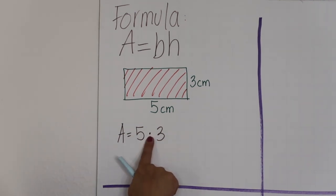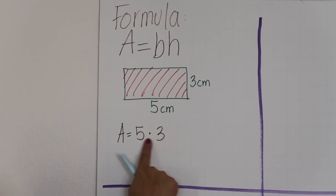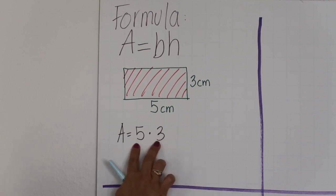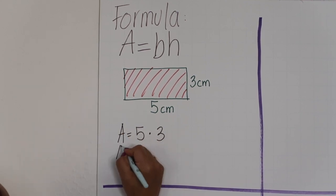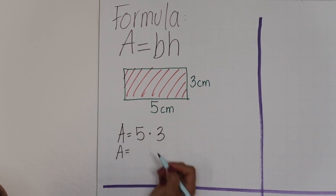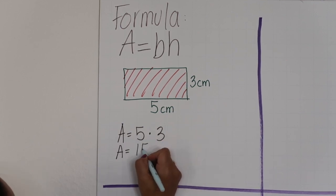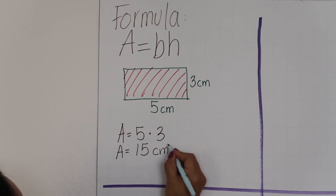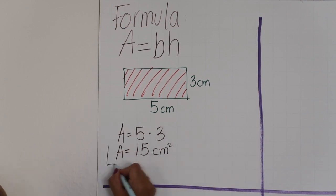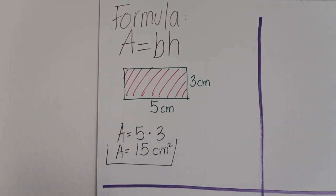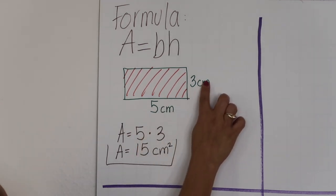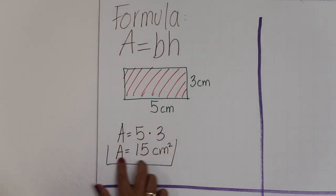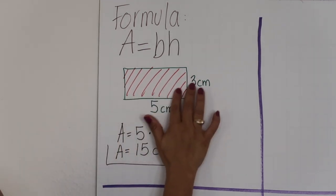You can use a dot, a multiplication symbol, or parentheses to represent multiplication. So A equals 5 times 3 is 15 square centimeters, and this will be the answer. All you have to do is multiply the base times the height to find the area of this rectangle.